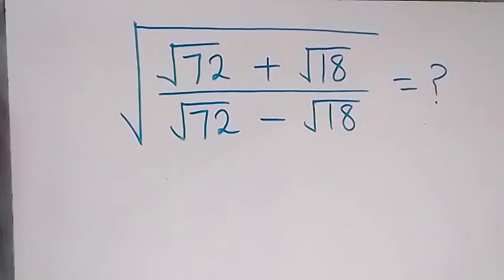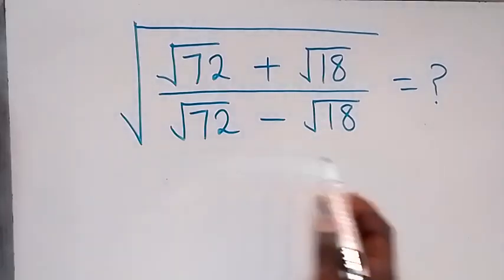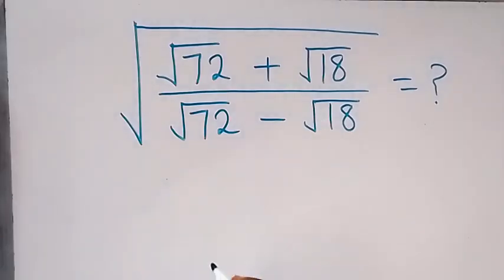Hello, you are welcome. How to solve this nice problem involving roots? We have square root of root 72 plus root 18 divided by root 72 minus root 18.